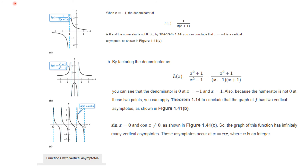Applying this theorem to examples: for h of x equal 1 over 2 times the whole of x plus 1, at x equals minus 1 we have a vertical asymptote. For h of x equal to x squared plus 1 over x squared minus 1, we can factor the denominator and see vertical asymptotes at x equals minus 1 and x equals plus 1. And because sine of x equals zero and cosine of x is not zero at multiples of pi, the graph of h of x equals cotangent of x has vertical asymptotes occurring at x equals n times pi, where n is an integer.